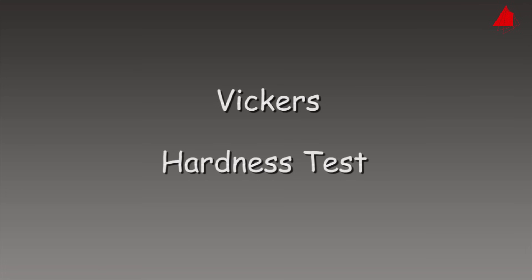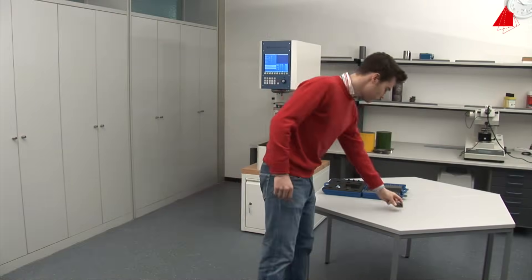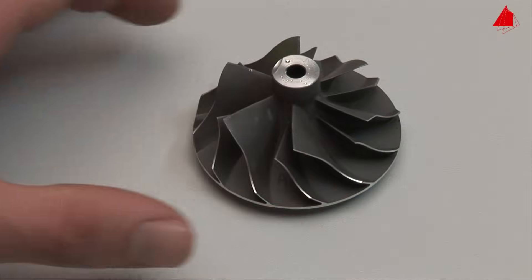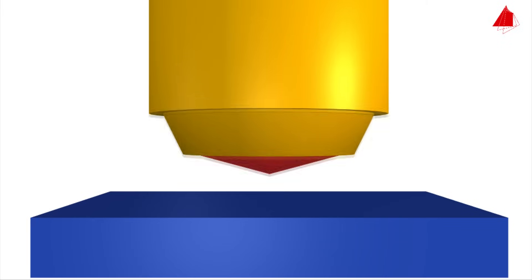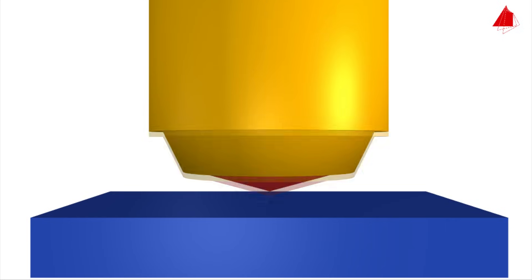The Vickers Hardness Test. The hardness of a compressor wheel for a turbocharger is to be measured using the Vickers method. The main principle of this hardness testing method is to press a pyramid-shaped diamond indenter with an exactly defined force onto the test piece and then to evaluate the surface area of the indentation.